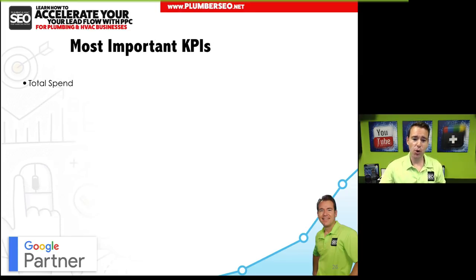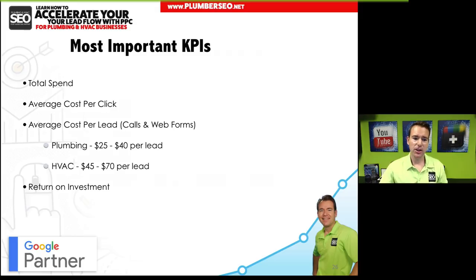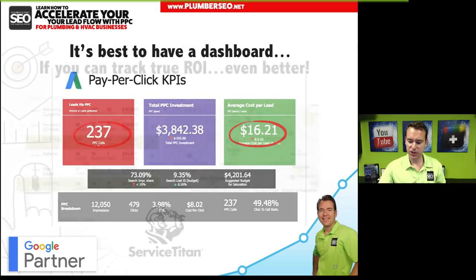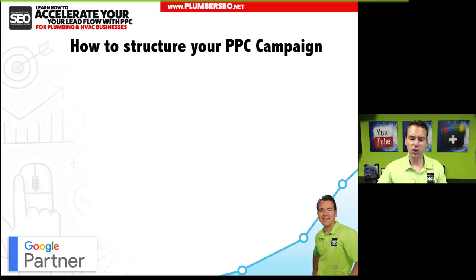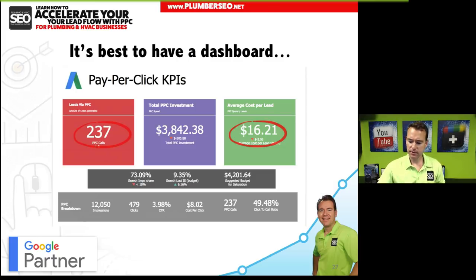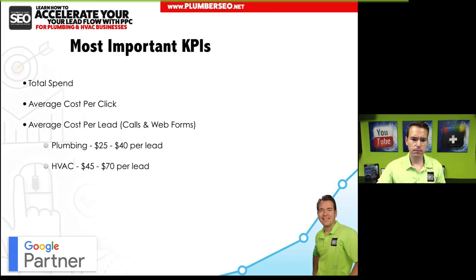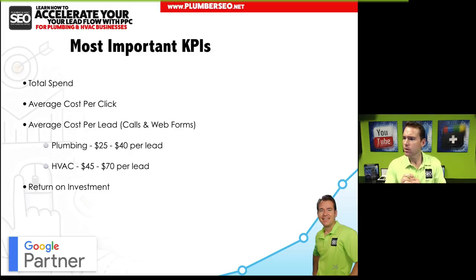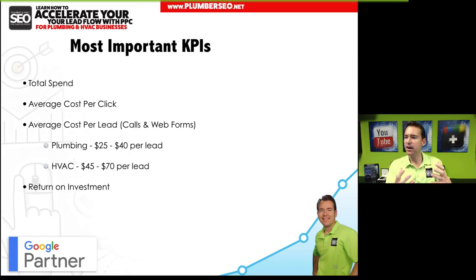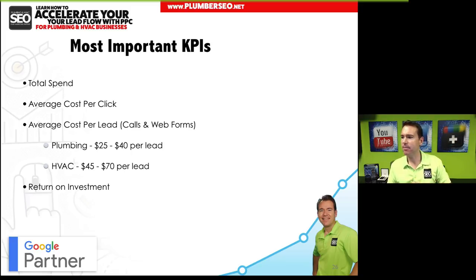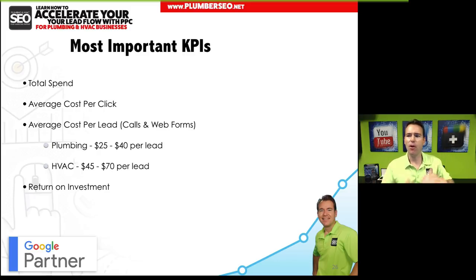You want to know your return on investment — have at least some barometer to ask whether those dollars invested generated a return. Do you currently have access to this kind of data in your pay-per-click marketing? What do you like about being able to see this type of information as you think about scaling and growing your lead flow via paid search?